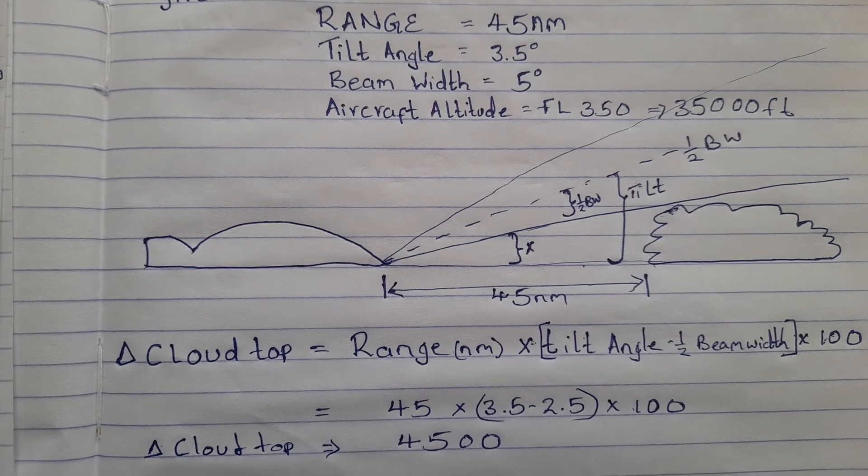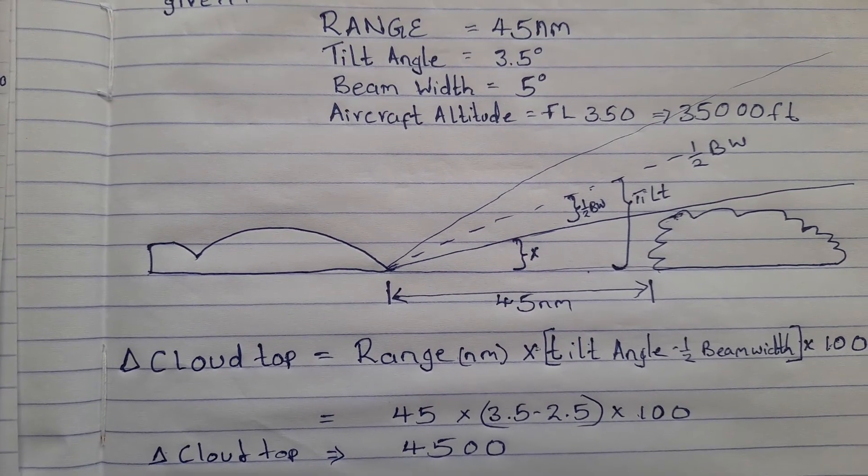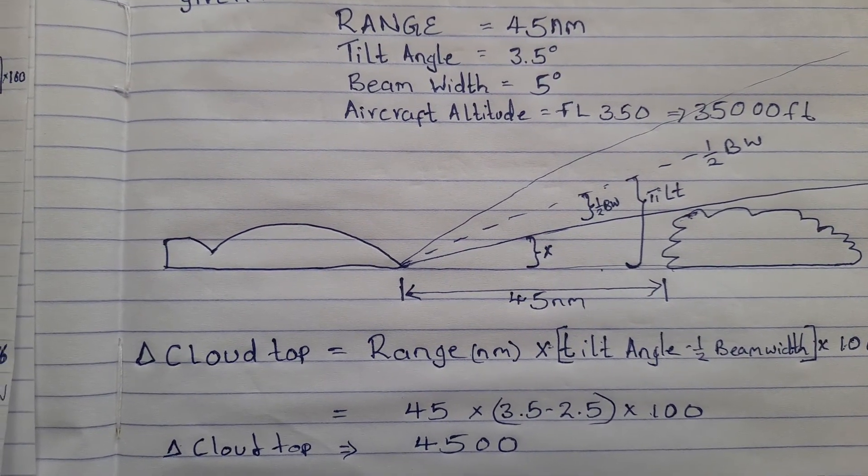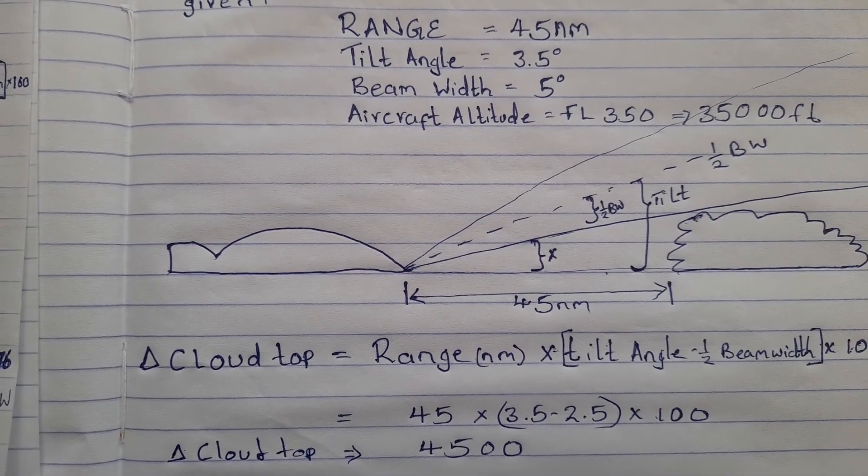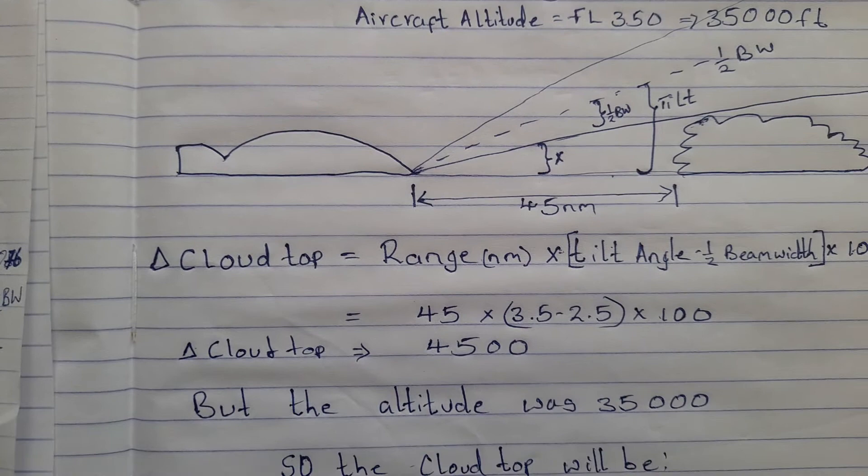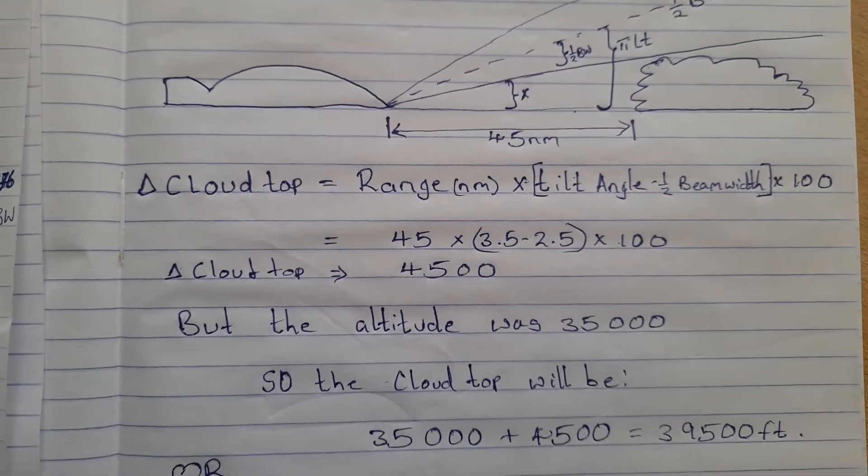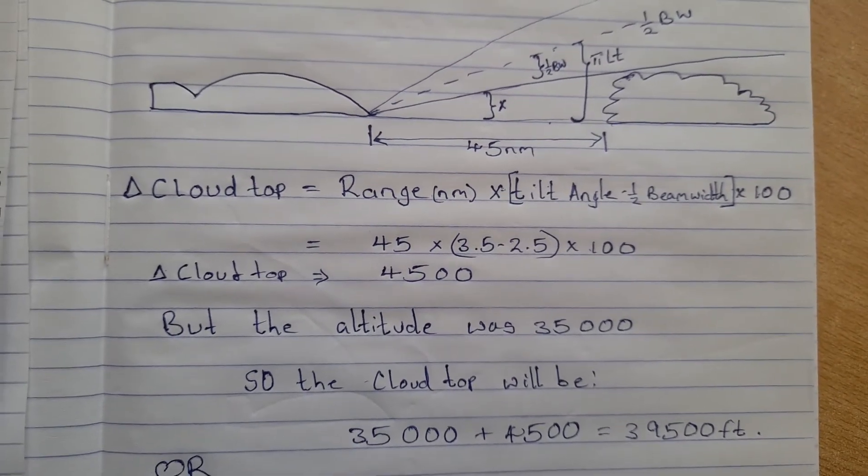But remember we started from 35,000 feet altitude, so it's 35,000 altitude plus 4,500. It will give you the top of the cloud. So if you add the two you get the top of cloud to be 39,500 feet. Alternatively, there is another formula that you can use.